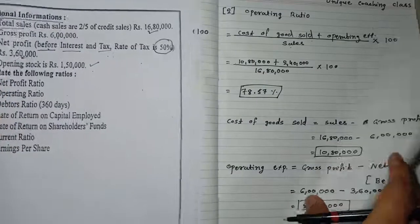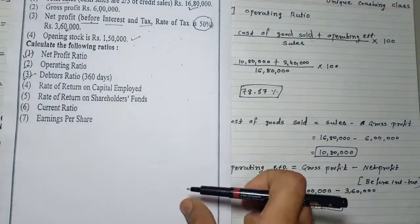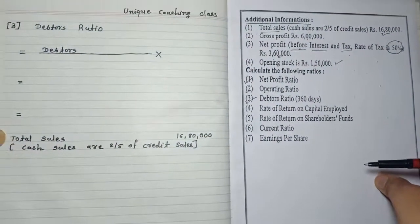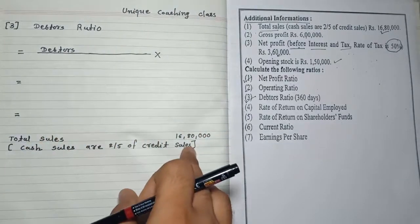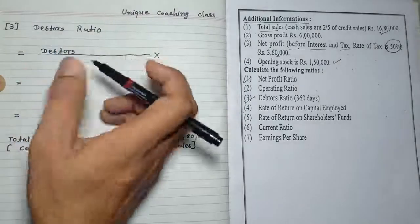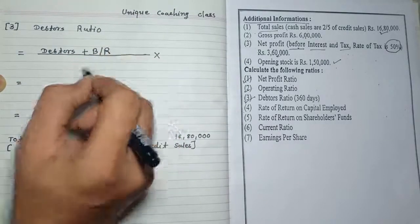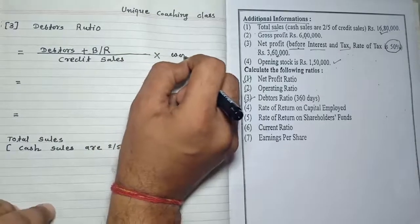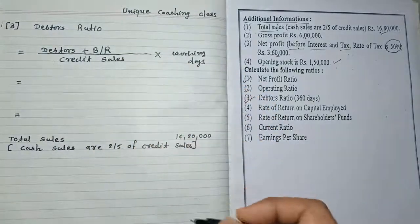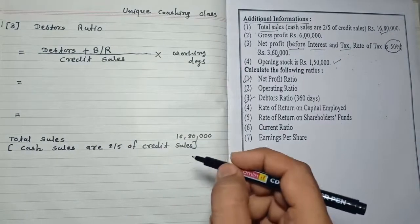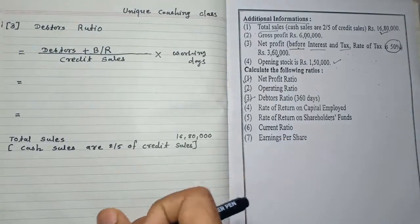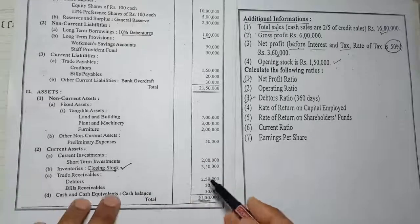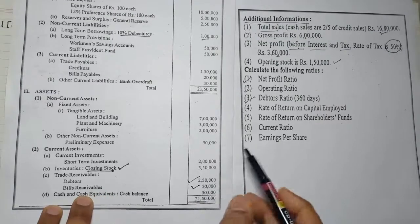The third ratio is debtor turnover ratio. The formula for debtor ratio is: debtors plus bills receivable, divided by credit sales, multiplied by working days. Now checking the balance sheet — debtors are 250 and bills receivable is 50.